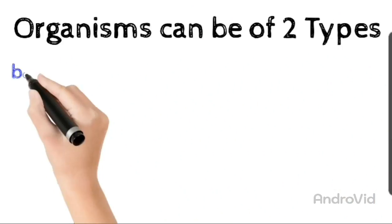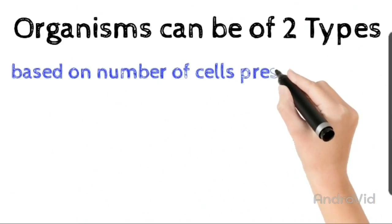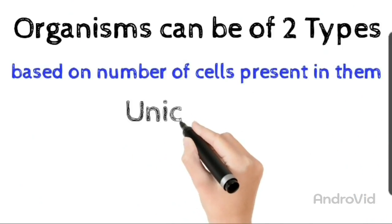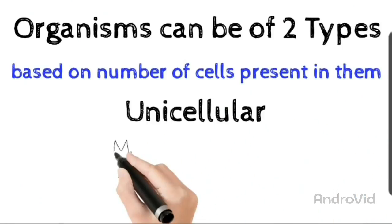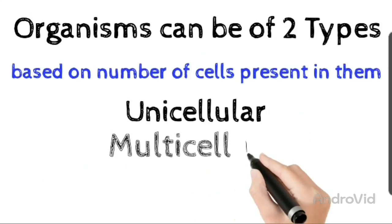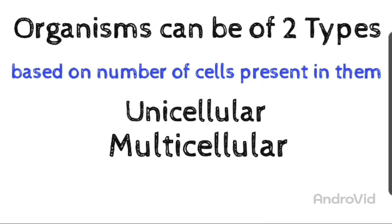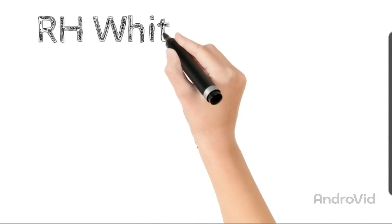So organisms can be divided into two different types based on the number of cells present in their body. For example unicellular and multicellular organisms. नाम से ही साफ है कि unicellular organisms में एक cell होगा जबकि multicellular में बहुत सारे cells होंगे.